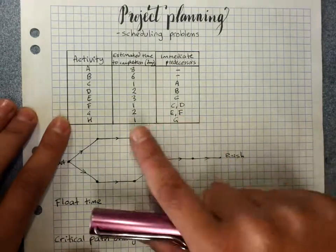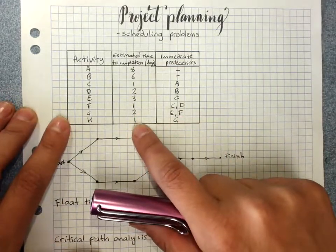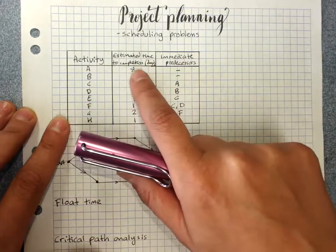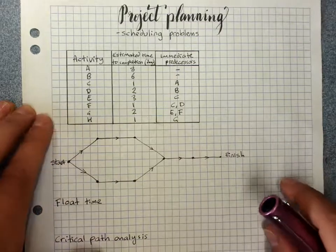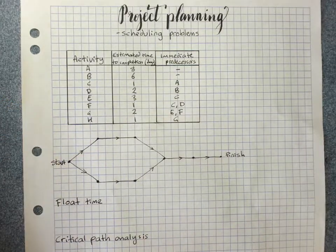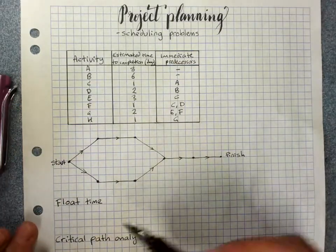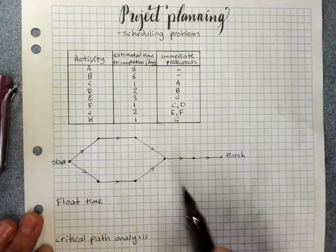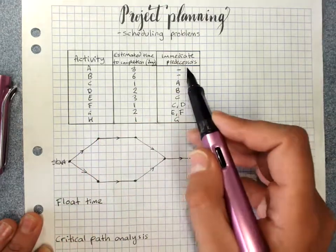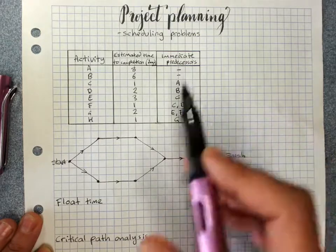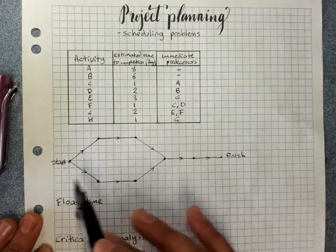So this is a precedence table, but we've added in a weighting, the estimated time to completion in days of each of our activities. When we put those weights along the activity network, you'll see I've done it in the larger one down the bottom. Activity A and B don't have any immediate predecessors, so I'll just go through popping these into our activity network.